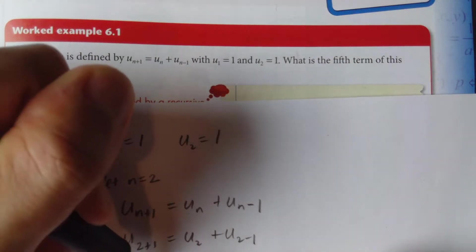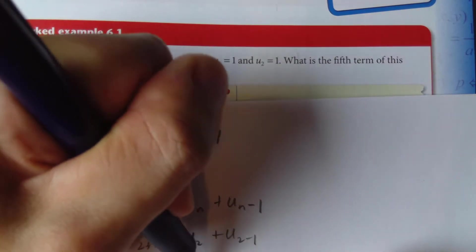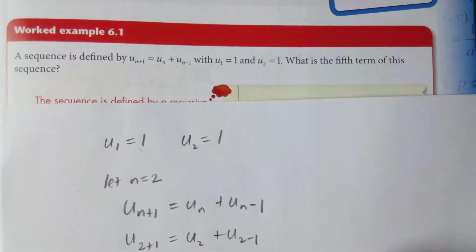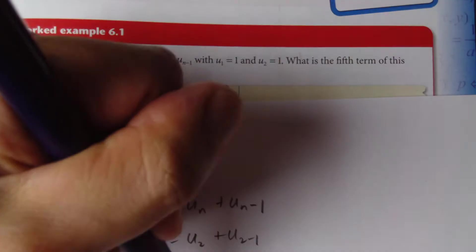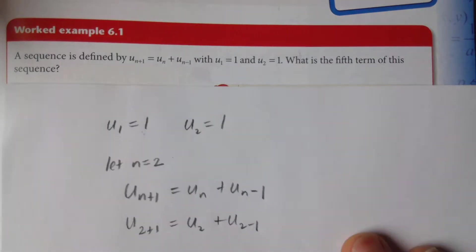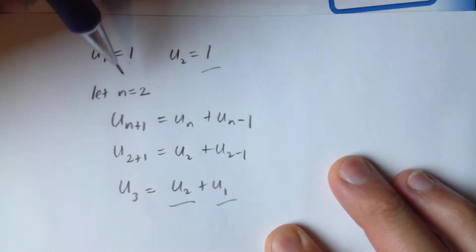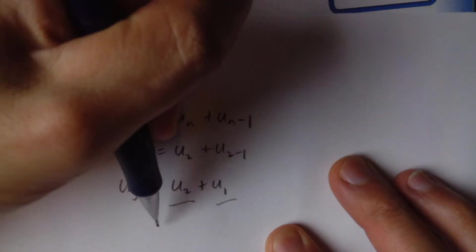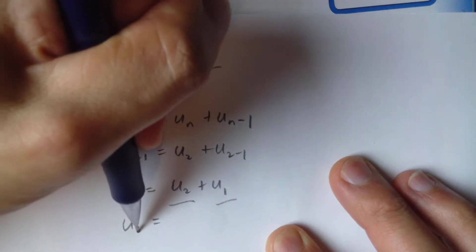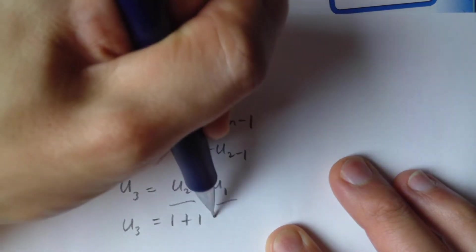So u3 equals u2 plus u1. And we know what u2 is. u2 is 1 and so is u1 up here. So therefore u3 equals 1 plus 1, which equals 2.